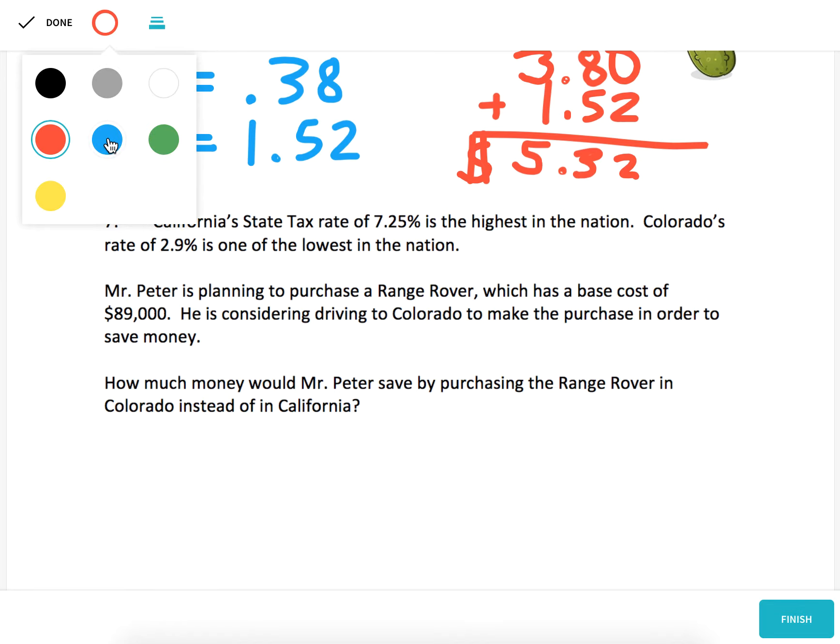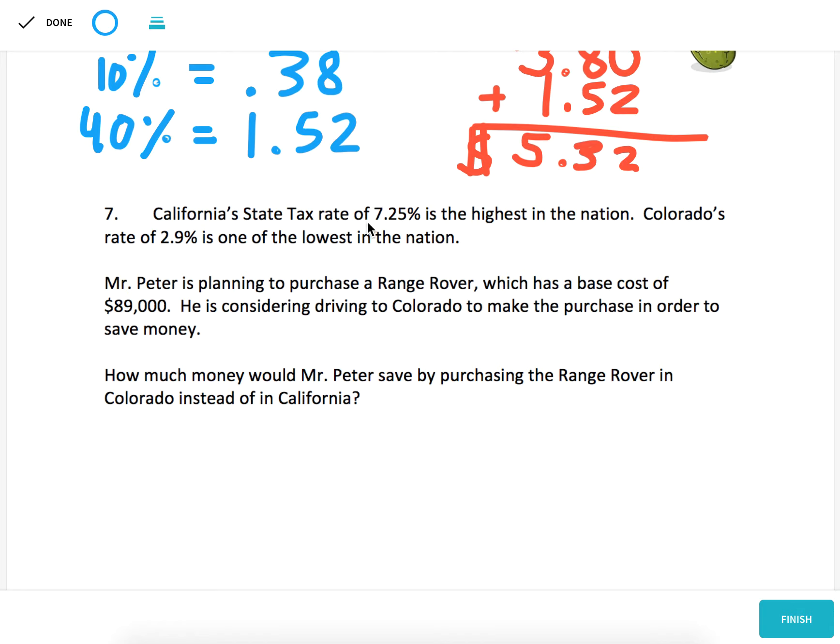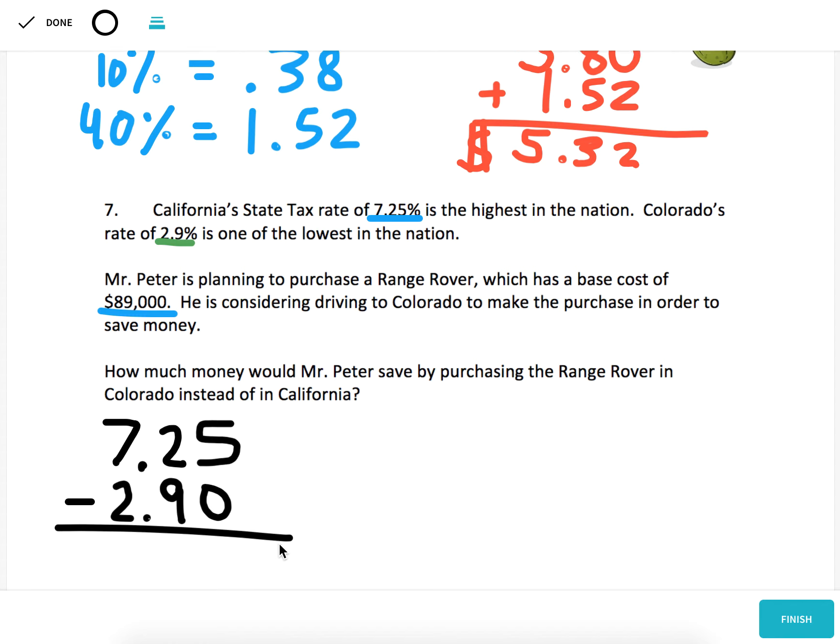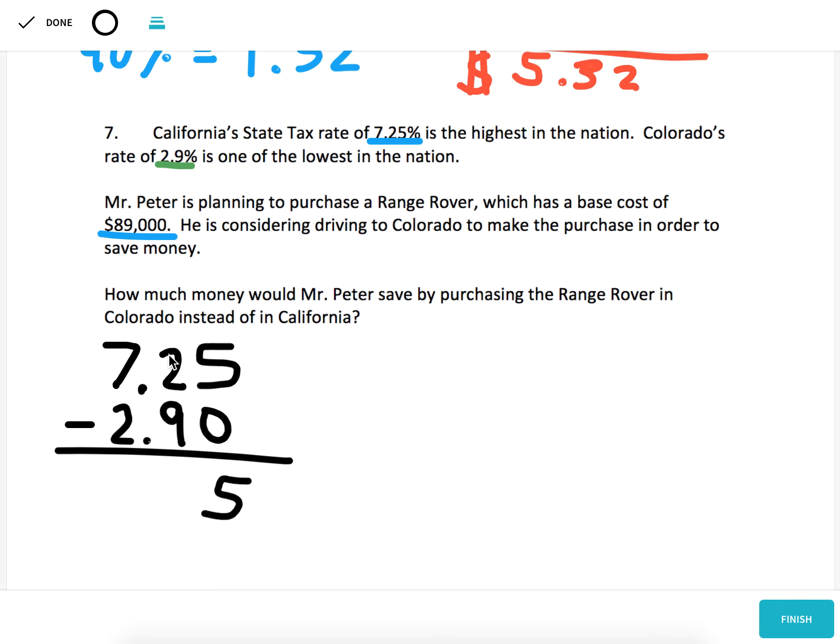So the reason I wanted to look at this is to show you a shortcut. We could find 7.25% of $89,000 and then find 2.9% of $89,000 and find the difference, subtract away and that would be how much I'd save. But instead, let's do the subtraction up front. Let's start the problem off with subtraction and then we'll only have to multiply one time. So let's subtract 2.9 from 7.25 to find the difference in percent in tax rates. Let's see, 72 minus 30 is 42, so 4.35%.